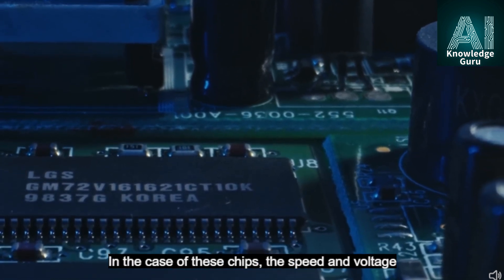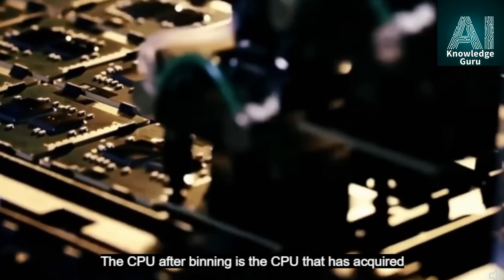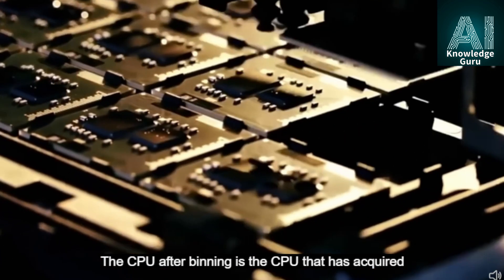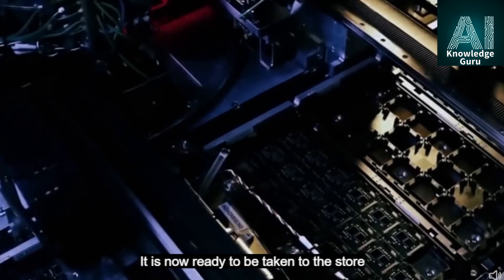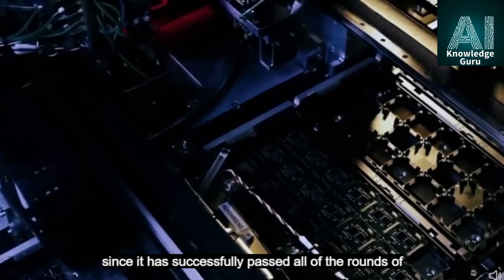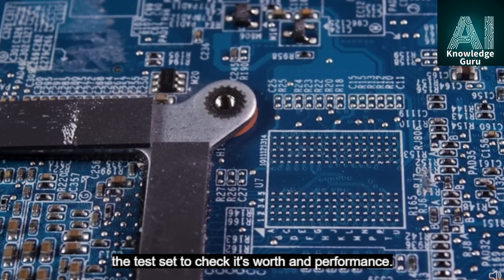The other set of chips have almost half of their cache disabled. In the case of these chips, the speed and voltage issues are taken into consideration. The CPU after binning is the CPU that has acquired all the necessary features to be sold and purchased. It is now ready to be taken to the store since it has successfully passed all of the rounds of the test set to check its worth and performance.